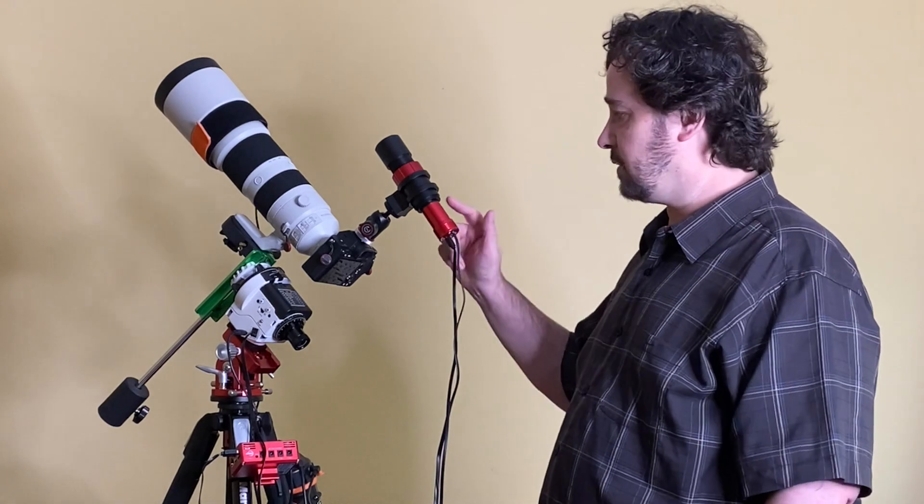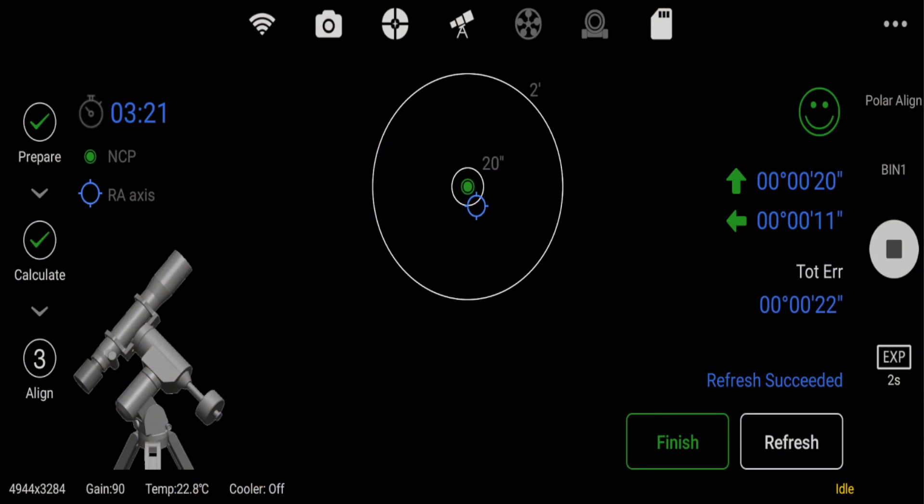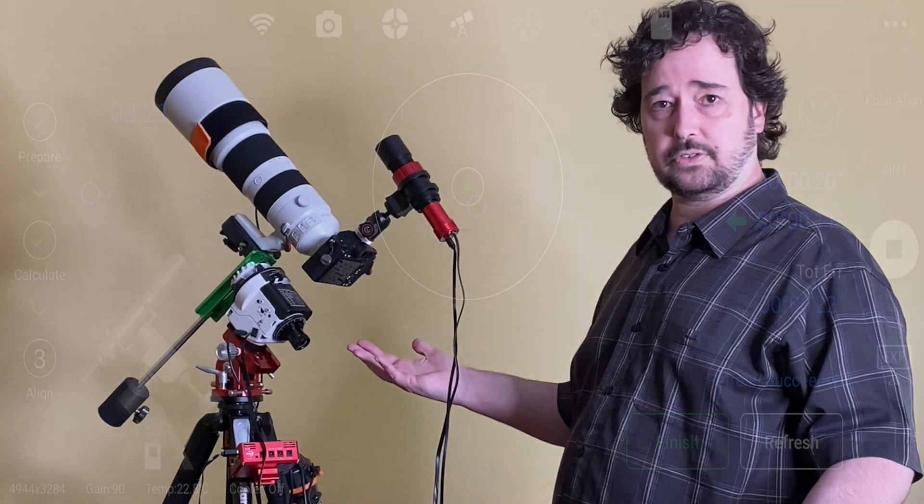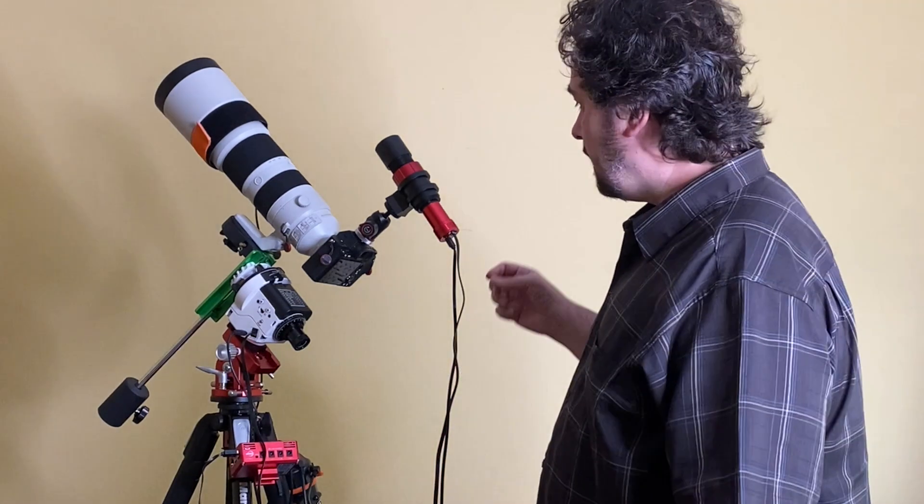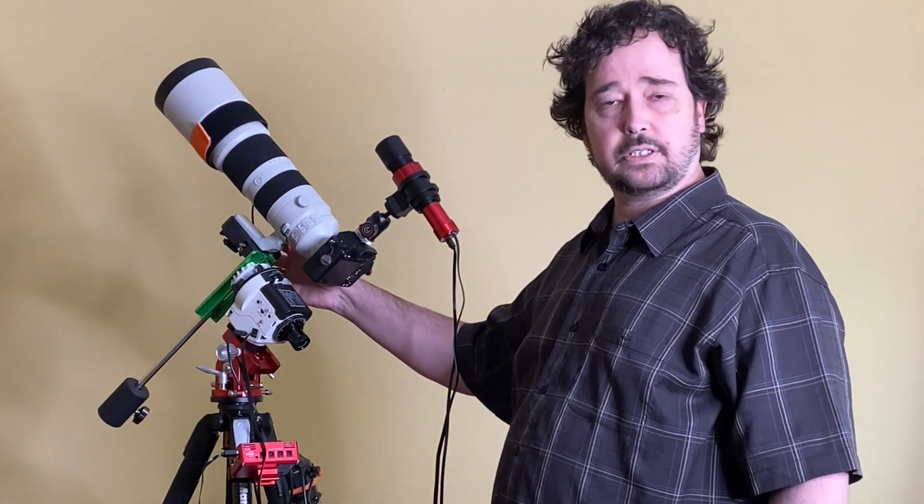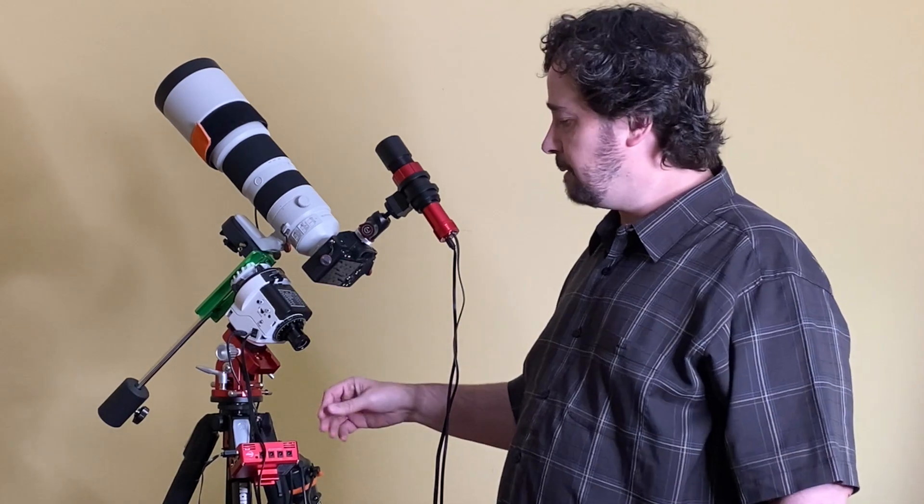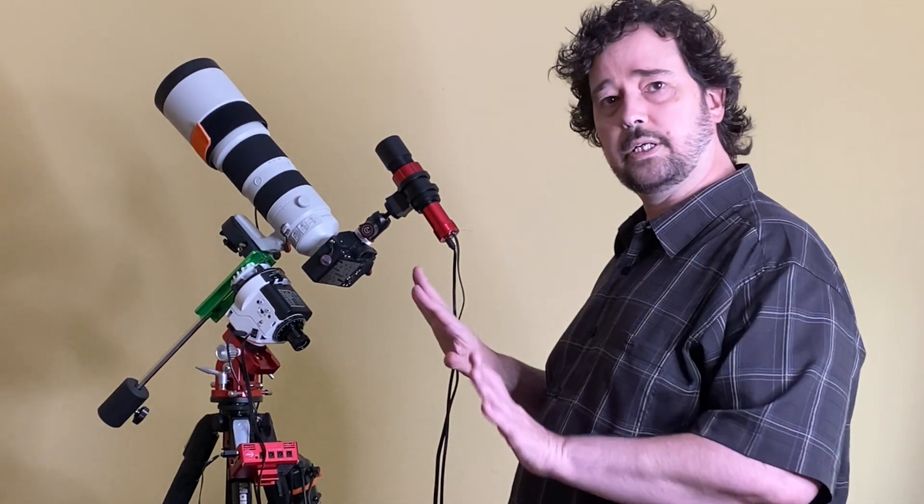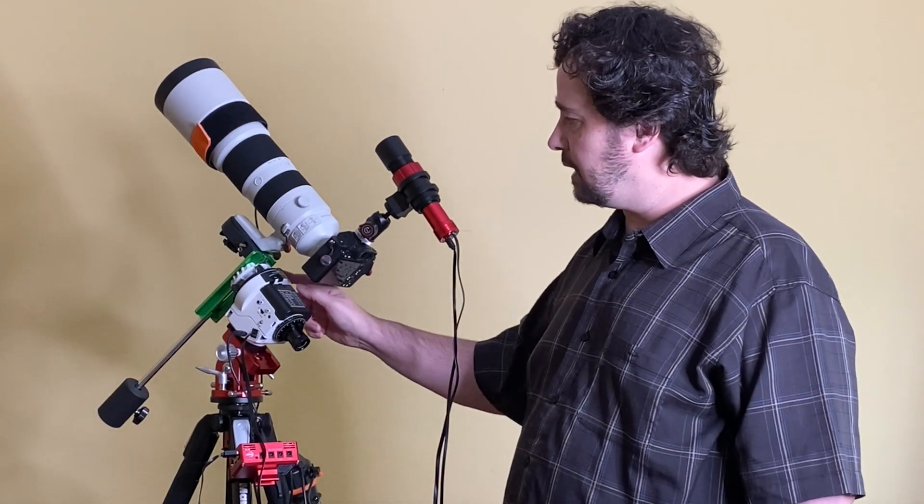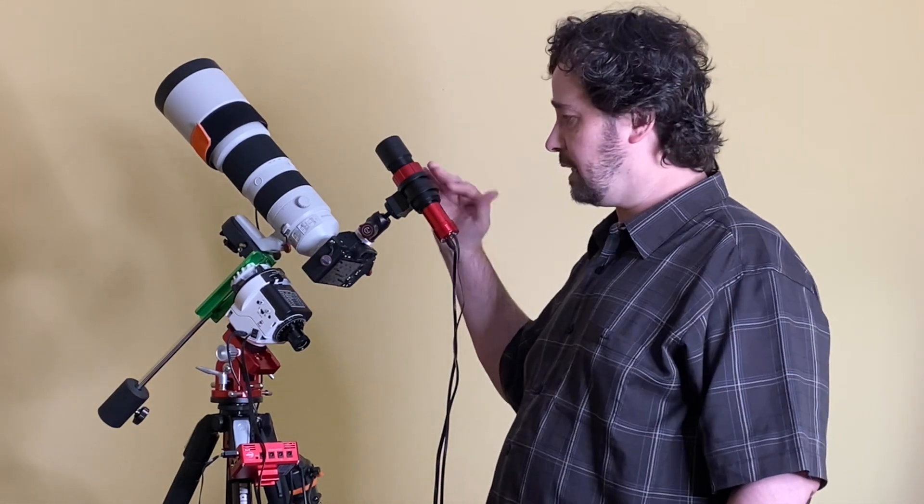Another thing that you can do with this is use it to do polar alignment. So using the same camera, I can ask the ASI air to do what's called plate solving, where it'll take a picture with the camera and it'll solve for where exactly must that camera be pointing to see those stars. And if you take one image and then you rotate the mount, say 60 degrees, take another image.